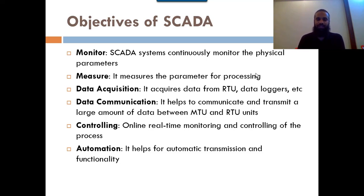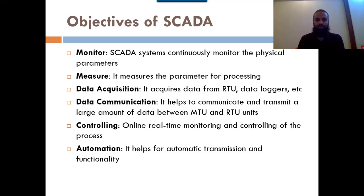The objectives of the SCADA system are: first, to monitor the parameters of the power system; second, to measure those parameters — for current measurement it uses CT (current transformer), and for voltage measurement it uses PT (potential transformer) or different kinds of relays to protect the system. It also requires data acquisition — data loggers continuously observe and save information in a central controller.